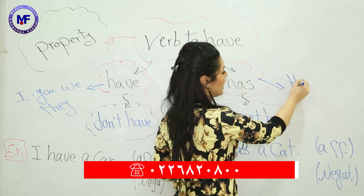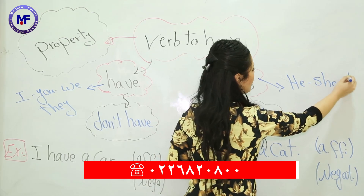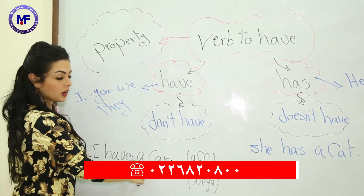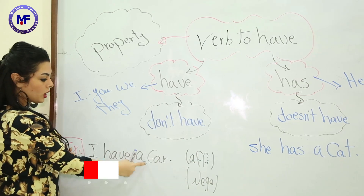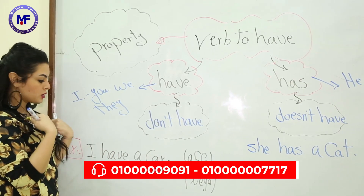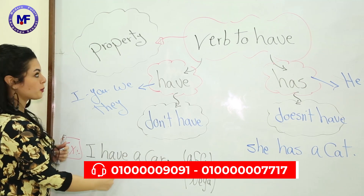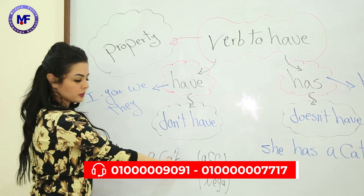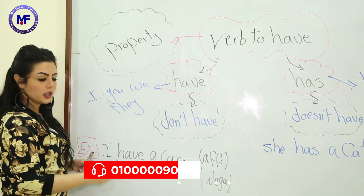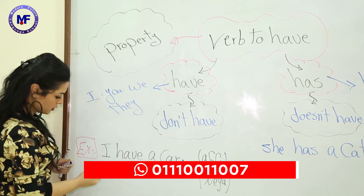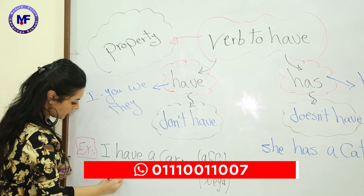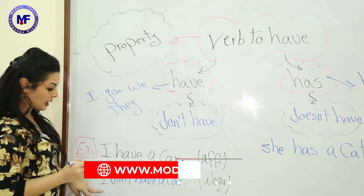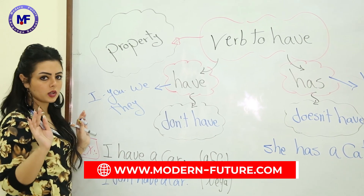'Has' in the affirmative form will be 'doesn't have' in the negative form. 'Has' will come with he, she, and it. Let's have an example: 'I have a car.' This car belongs to me — it's mine — so we use 'have' to express property. If I want to make it negative, I write: 'I don't have a car'.